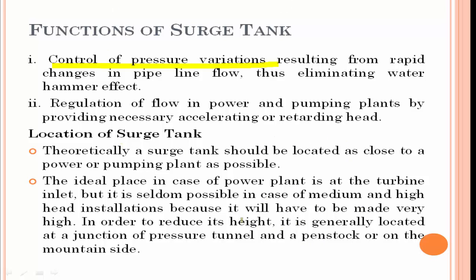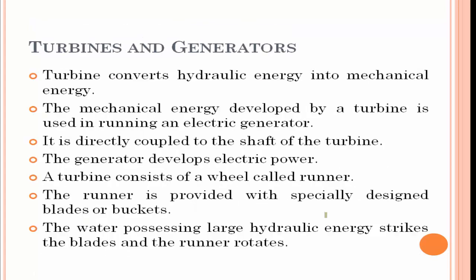Next are turbines and generators. A turbine converts hydraulic energy into mechanical energy. The hydraulic energy available in water is converted into mechanical energy, and this mechanical energy will run the electrical generator, from which we can expect electricity. The generator develops electric power. A turbine consists of a wheel called a runner.